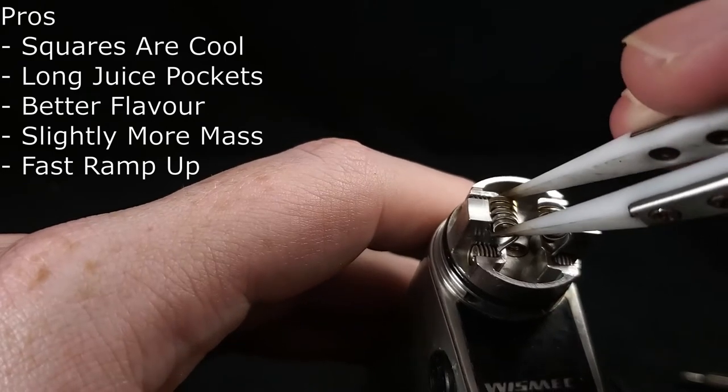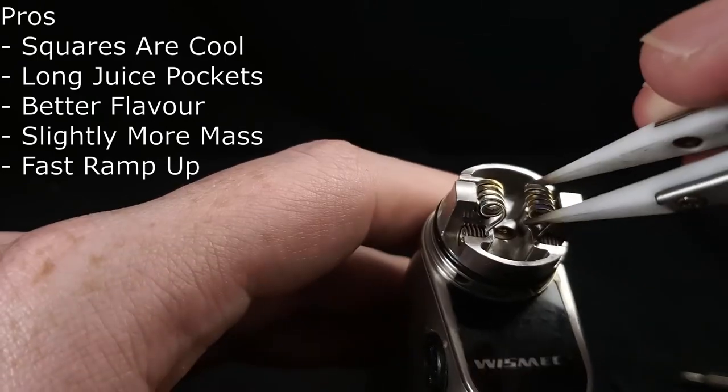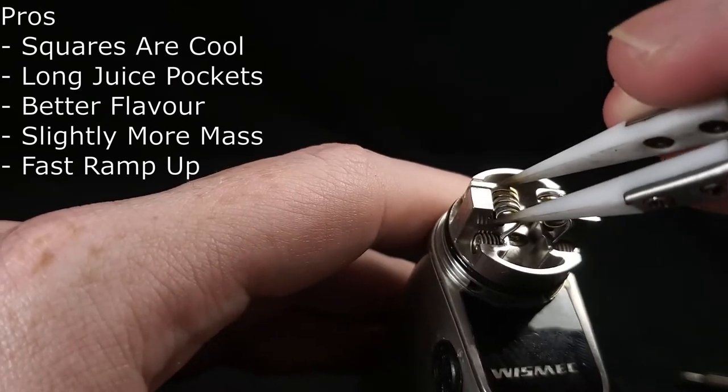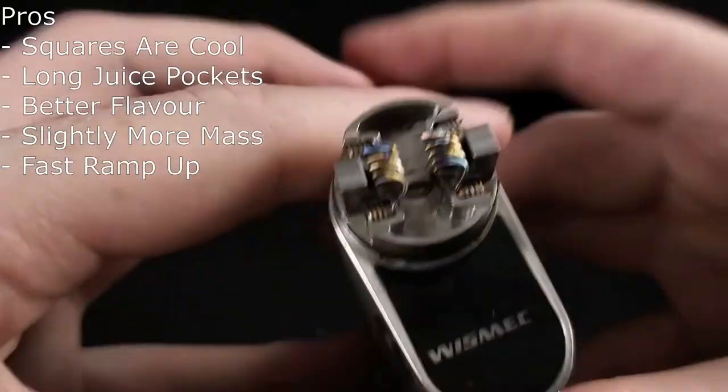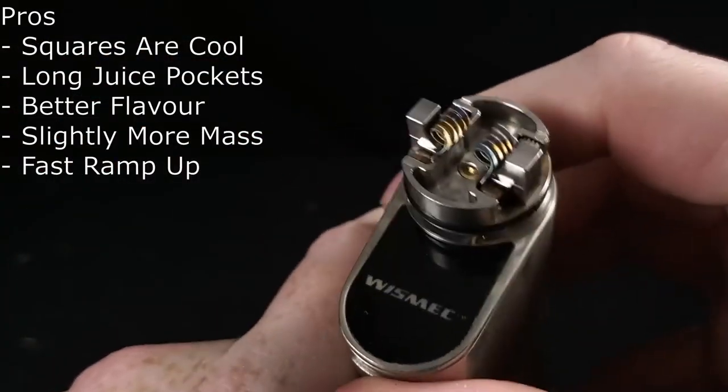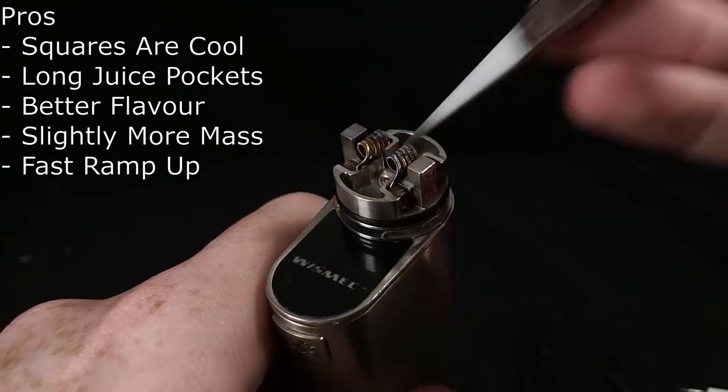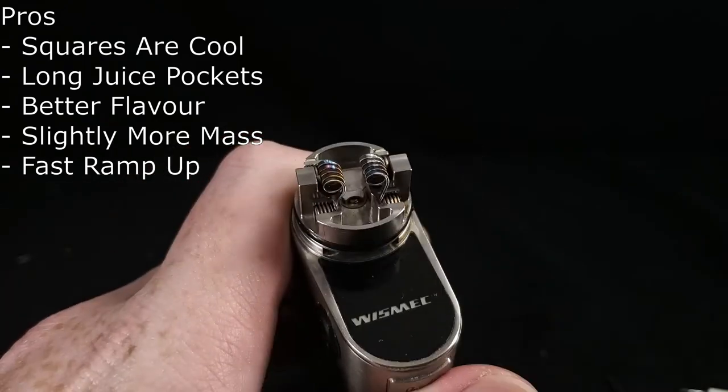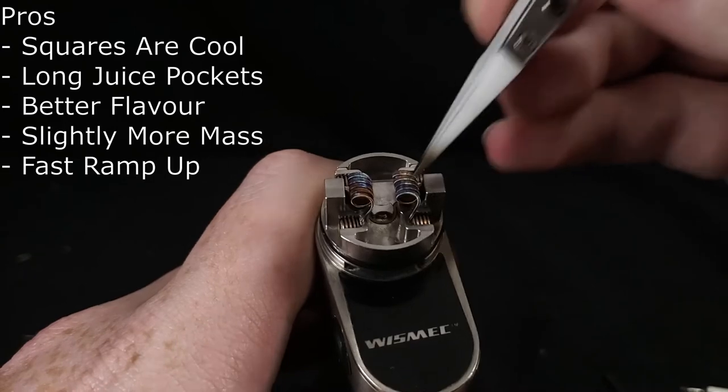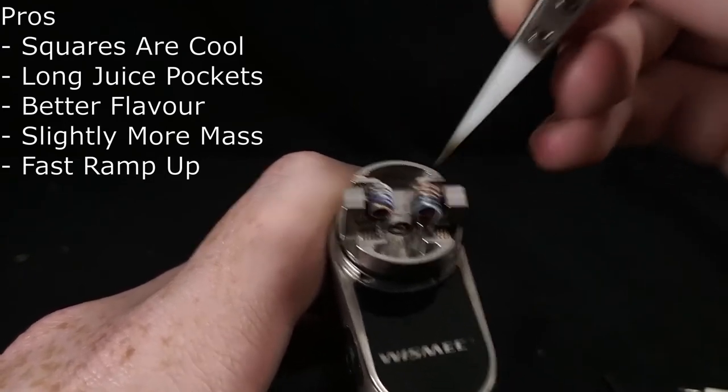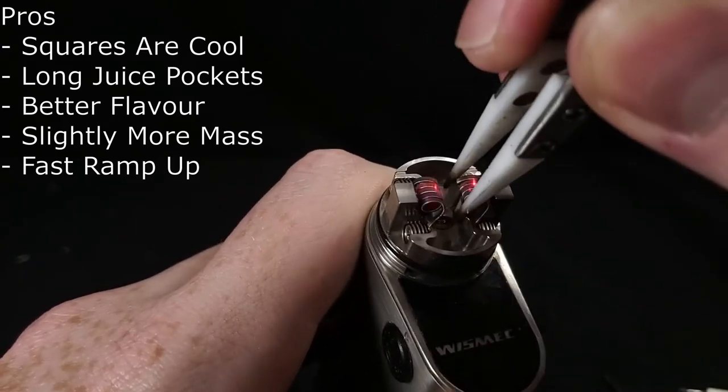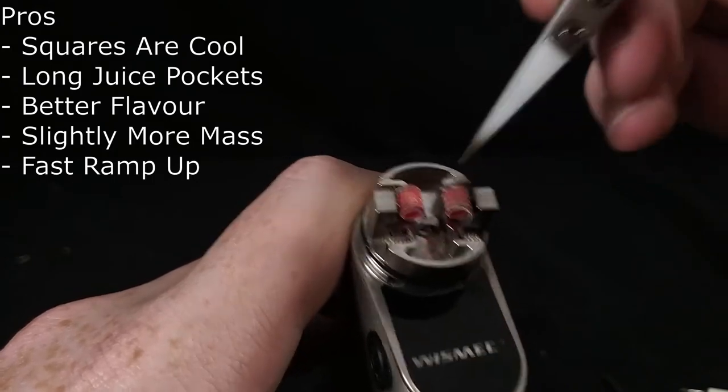Throughout the actual coil itself, it has many small channels running through it due to the divots between the actual pieces of ribbon, which gives it a little bit of a better flavor. And due to the shape itself, it has slightly more mass than a fused clapton of a similar size. These are also known to have really nice ramp up times and they perform pretty well.